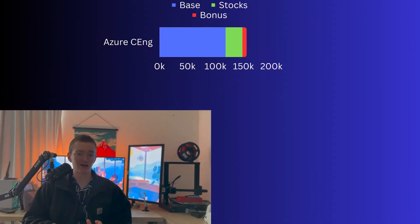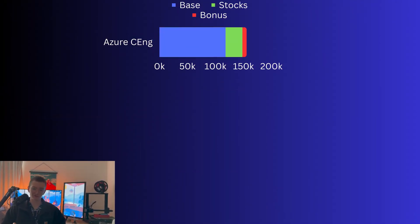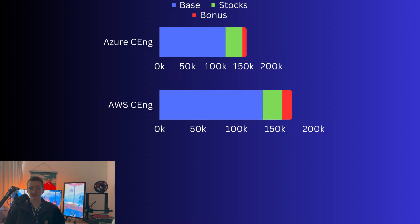So let's talk about cloud engineering roles now. Working at Azure you can expect to earn about $149–150k total compensation, and you can see there is quite a heavy stock element there with not a lot of sign-on bonus. Then jumping over to AWS, you can see there is a bit of a jump from $149k to about $170k, and a lot of that difference is being made up in the total cash pay — so AWS in this instance is paying quite a bit more cash.